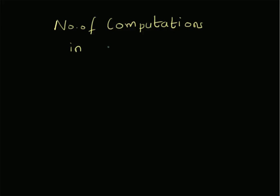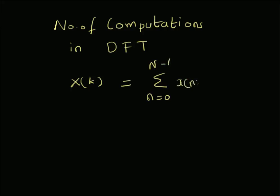In the definition of the Discrete Fourier Transform (DFT), the DFT is given by X(k) equal to the summation from n equals zero to N minus one of x(n) times e to the power of minus j two pi n k by N. Here we are looking at the N-point DFT of a sequence x(n) of length N, where n goes from zero to N minus one, and k also goes from zero to N minus one.